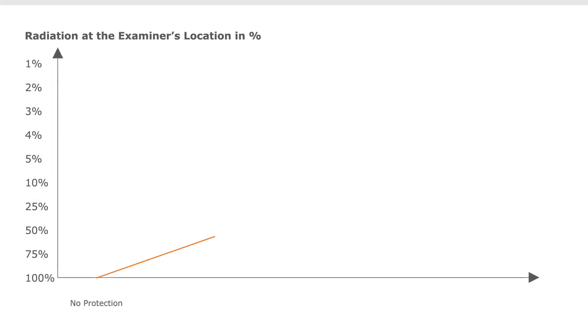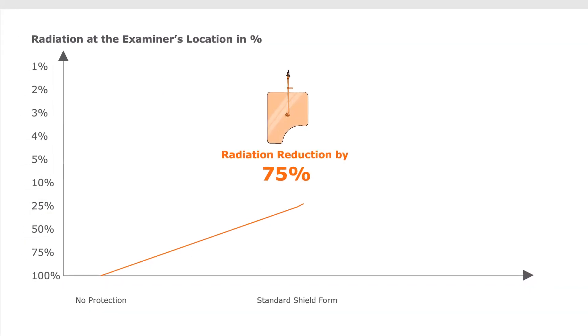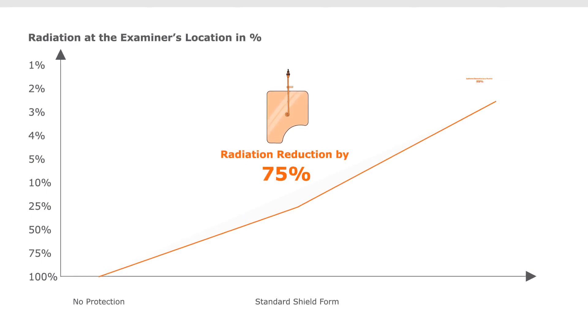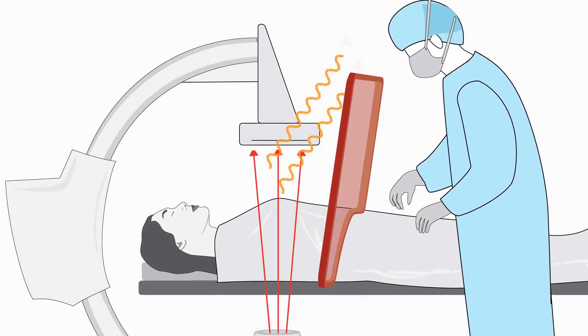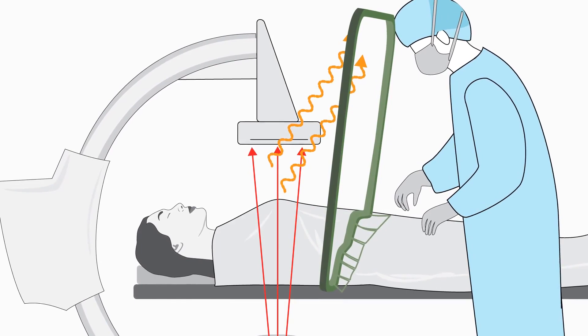The side of the shield has a panel curtain and drapes, which will minimize scattered radiation exposure to the examiner and assistant by 90%. The size of the shield is increased to protect the head and lens, even for tall examiners.